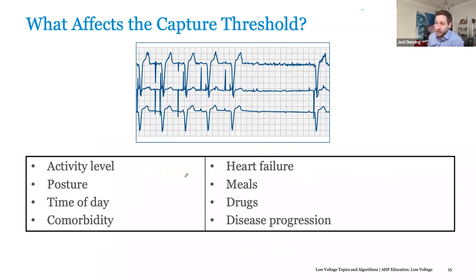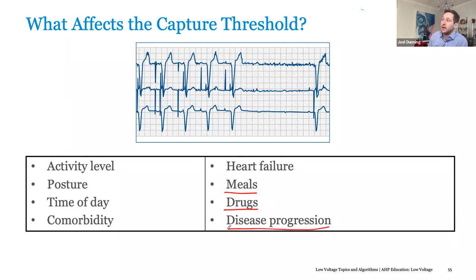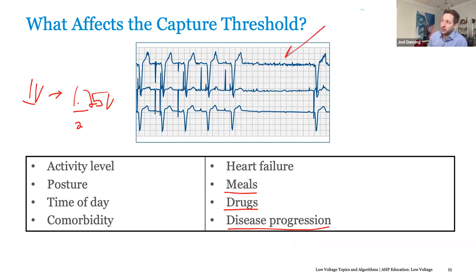What can affect thresholds? Any number of things — activity, posture, time of day, comorbidities, heart failure, whether or not they've eaten, whether or not they've taken their prescription drugs, and progression of disease over time. You may evaluate a patient on the table and then right after when they're standing up, the threshold is different. So just because you assess the threshold to be one volt, you don't necessarily set them at 1.25 volts permanently, because later on they stand up and now their threshold rises to two volts — and in patients who are dependent on a device, that's not ideal.